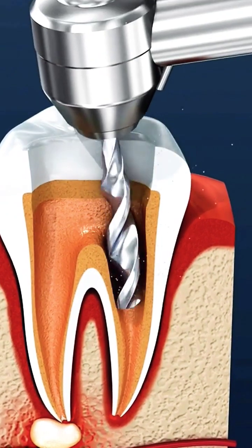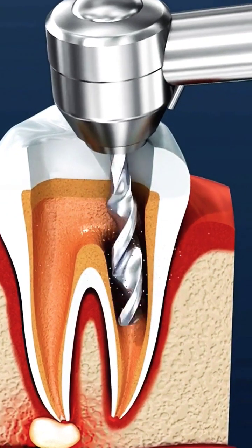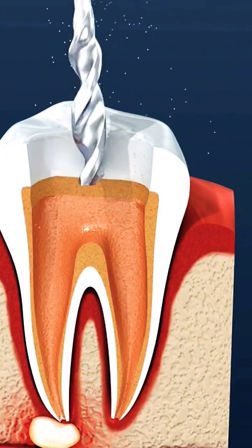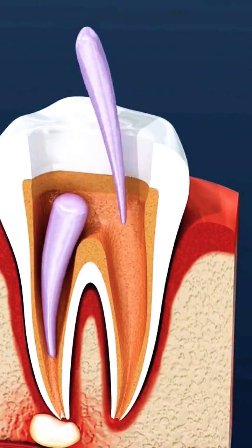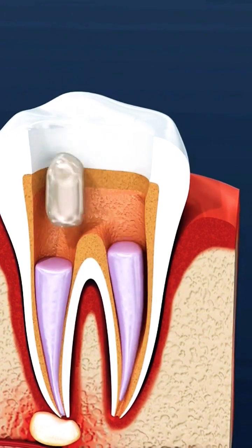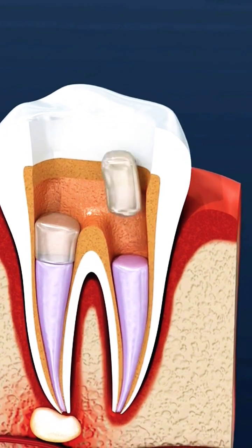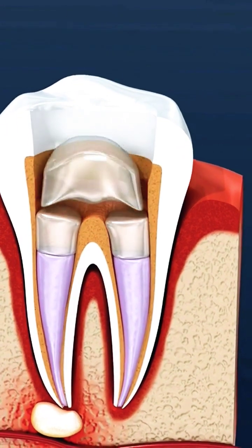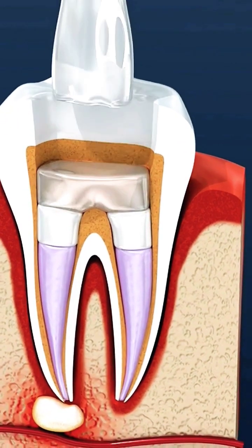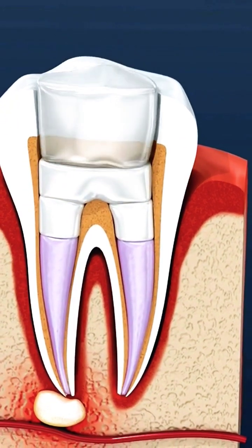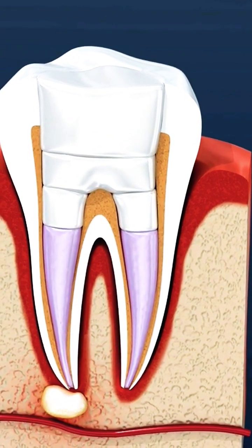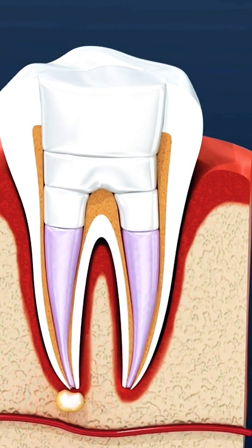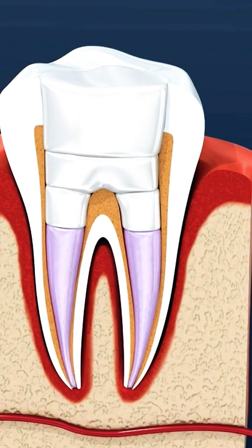Small files are used during a traditional root canal treatment to remove sick tissue and damaged tooth structure, as well as shape the inside of the canal to accept the material used to fill the tooth. Once the canals have been shaped, the tooth roots are totally sealed off and a temporary filling is placed.